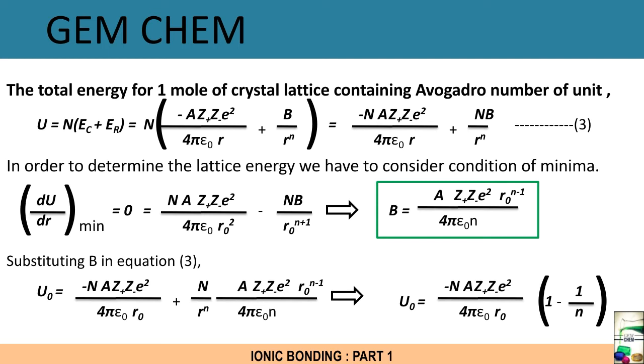We have already obtained this expression. In order to determine the lattice energy, we have to consider the condition of minima. The condition of minima tells that derivative of U with respect to r, that is the distance between the two ion pairs, in minimum condition is equal to 0. If we derivatize this expression present here, we see r comes to be as r₀², and rⁿ comes to be as r₀ⁿ⁺¹, and this expression equals 0. If we take all the terms in the left hand side and are left with B, then we get the expression of B which is the repulsive coefficient.